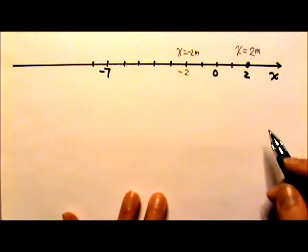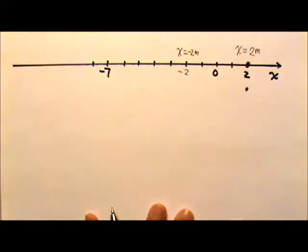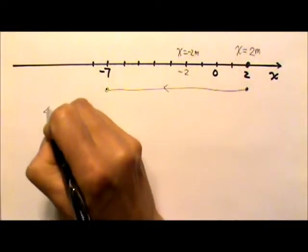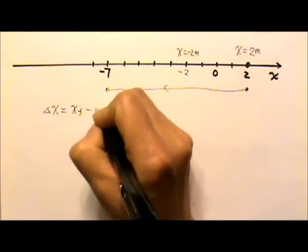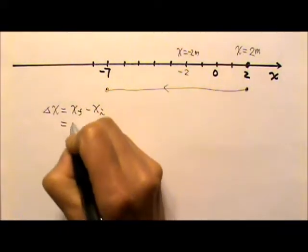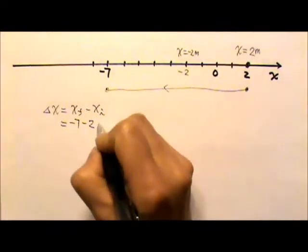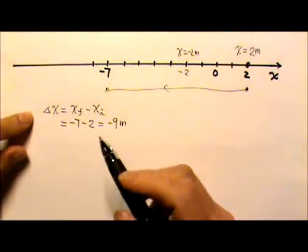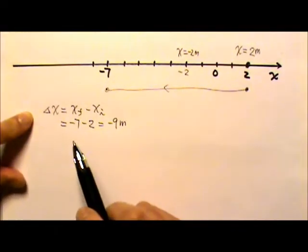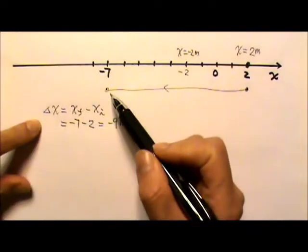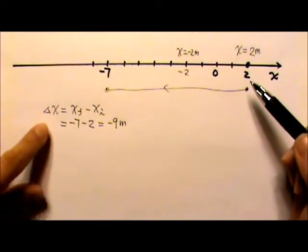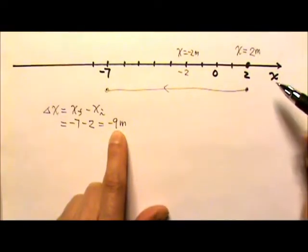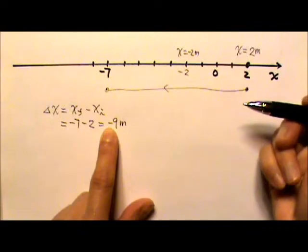Now let's look at the change in position. Suppose this object starts at x equals 2 and it moves to x equals negative 7. The displacement would be the final position minus the initial position: negative 7 minus 2, which equals negative 9 meters. Displacement is the change in position, and since position is a vector, displacement also carries a direction. The magnitude is 9 meters, and the negative sign tells you the change is in the negative x-direction.